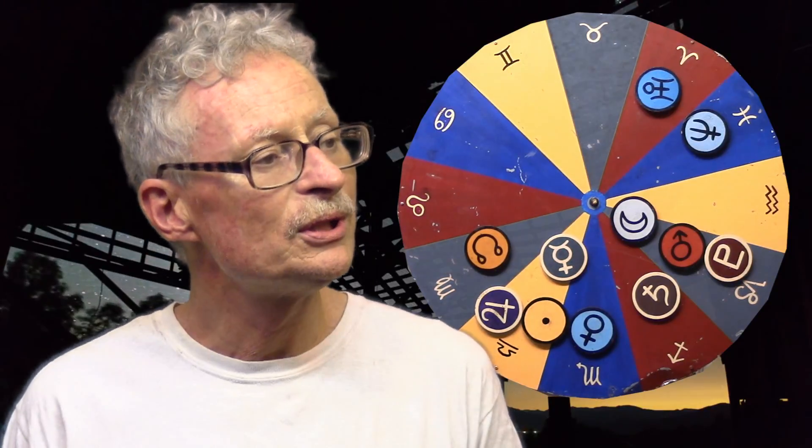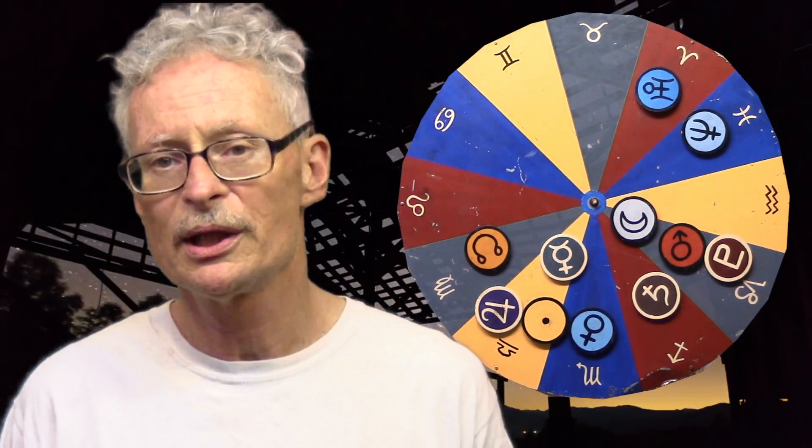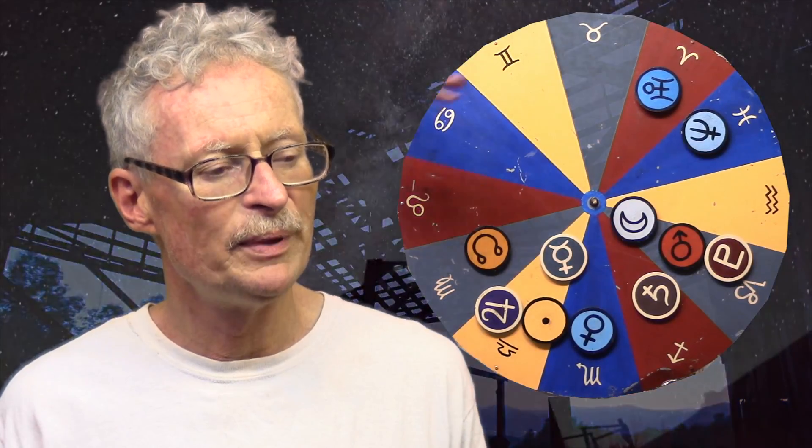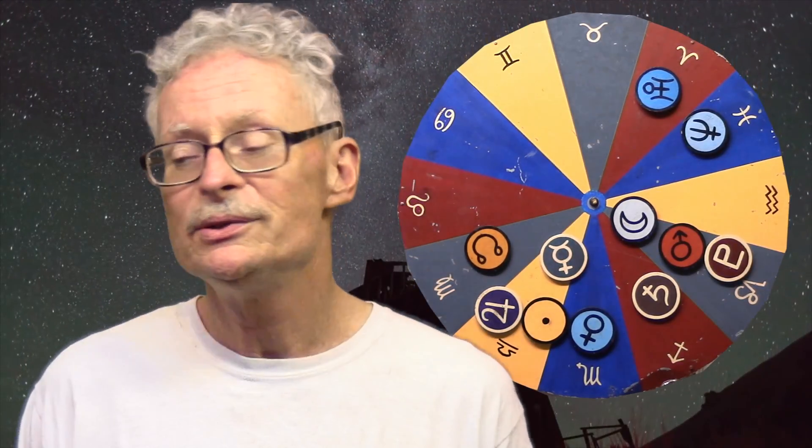Libra rules the third house. Third house is friendships that you made when you were a little kid or a teenager or even early 20s, kind of growing up. And it's also about communication and neighbors and your local environment and taking short trips. So, these are a lot of things you'll be engaged with.